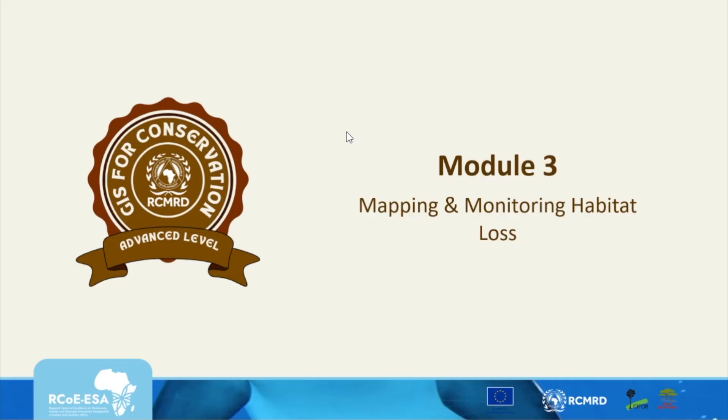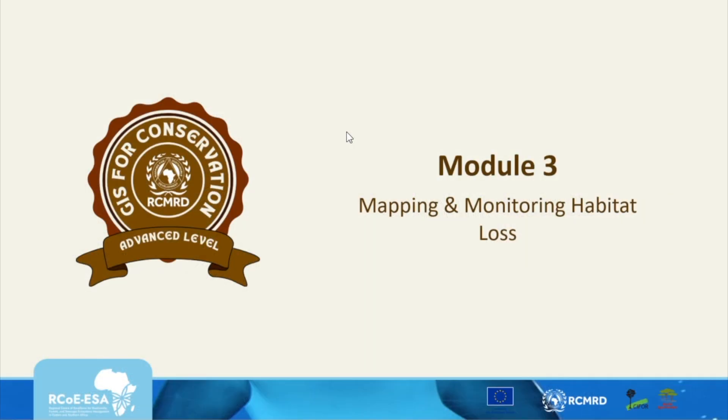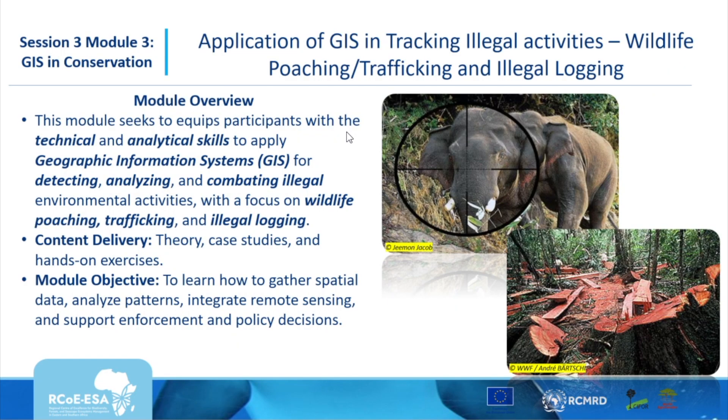Welcome to this session where we are moving into module three, looking at mapping and monitoring habitat loss and also looking at some of the illegal activities that happen within the environment. My name is Julius Buengo. This is session three. Module three deals with the application of information systems in tracking illegal activities, looking at two major activities: wildlife poaching and illegal logging and trafficking.